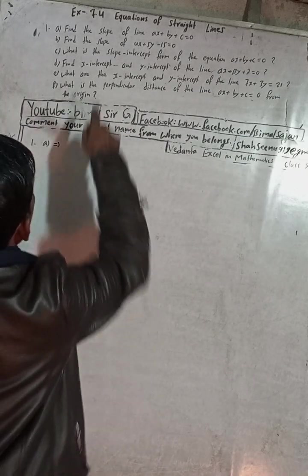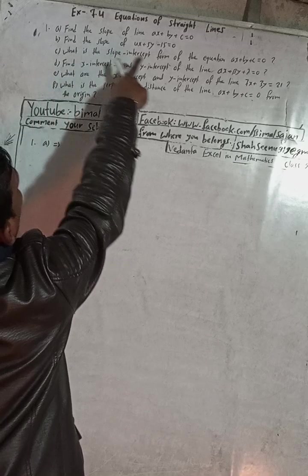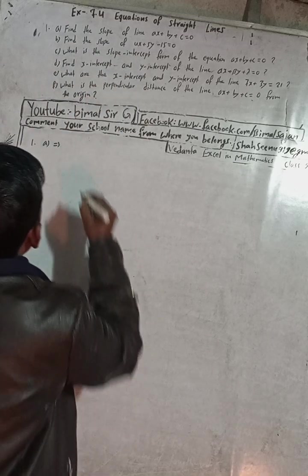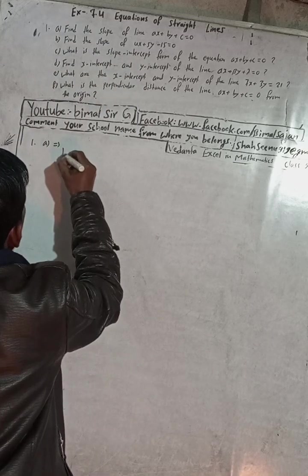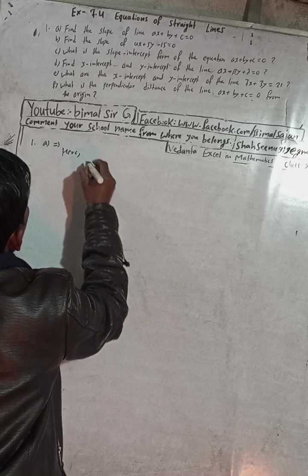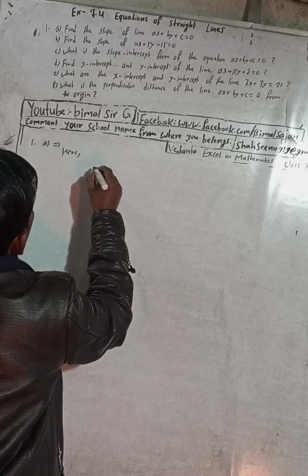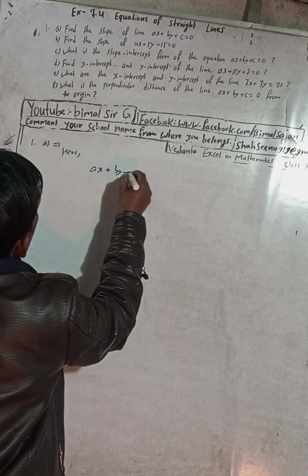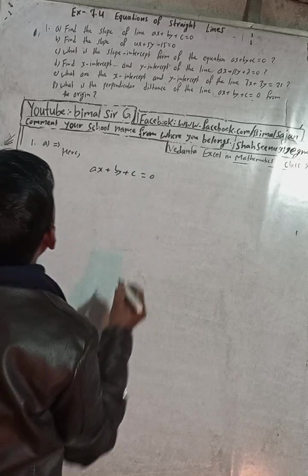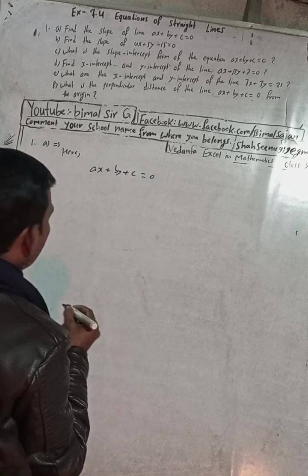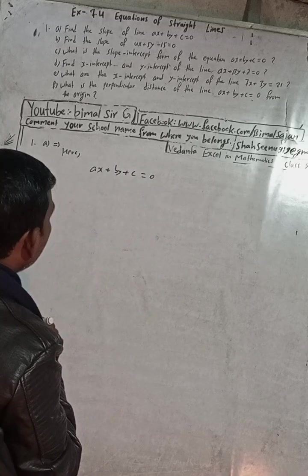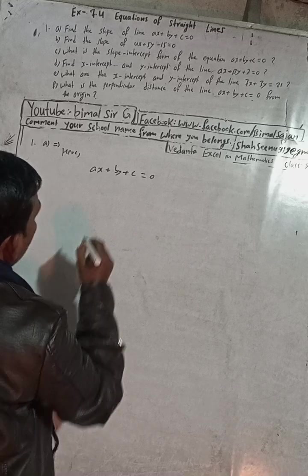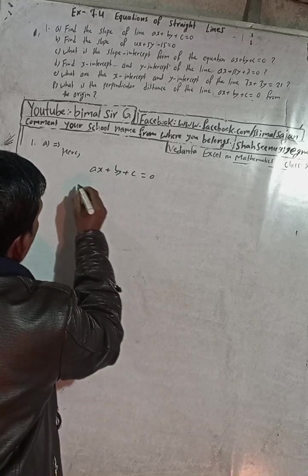Number (a): find the slope of the line ax + by + c = 0. Given line is ax + by + c = 0. To find the slope, I am going to convert this equation into slope-intercept form.